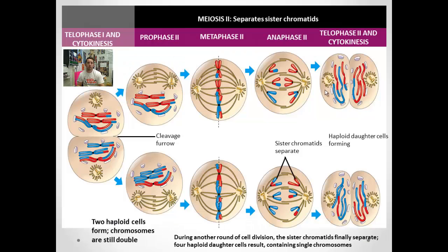In telophase II, nuclear membranes reform, the genetic material stretches back out, and we're forming gametes — haploid with 23 chromosomes in humans. If this is in males, we end up with four sperm cells through spermatogenesis. If it's in females, we end up with one egg and three polar bodies through oogenesis, which we'll talk about in another screencast.